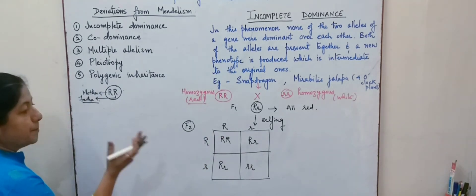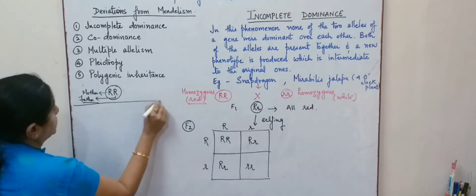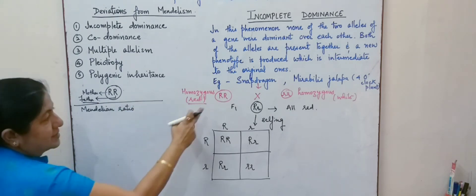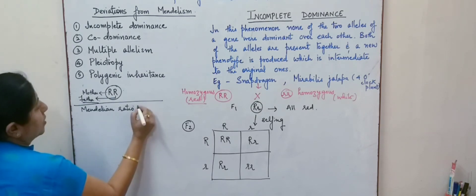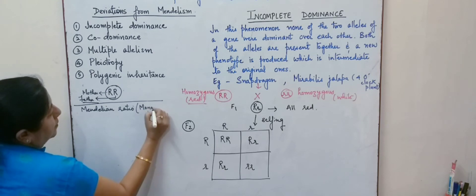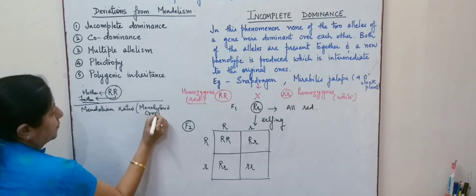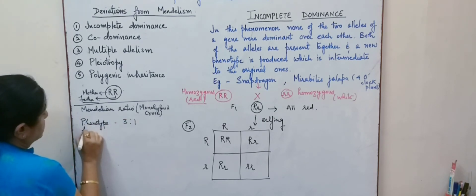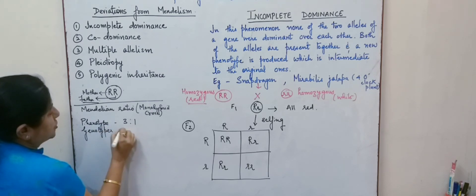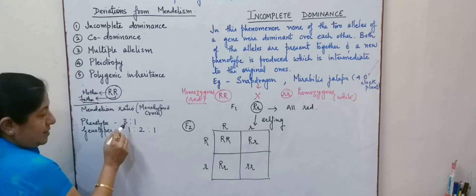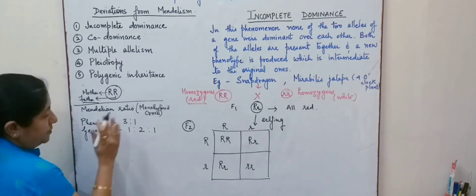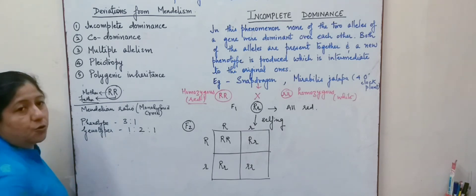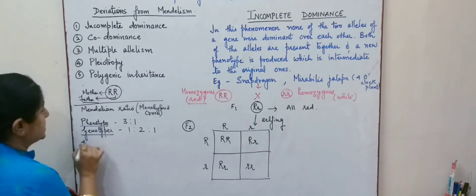Let us recall the Mendelian ratio for a monohybrid cross, since we are studying one trait. The phenotype ratio as proposed by Mendel was 3:1, whereas the genotype ratio was 1:2:1. That means 3 tall and 1 dwarf — since he conducted experiments on tall and dwarf plants — and genotypically, 1 homozygous tall, 2 heterozygous tall, and 1 homozygous recessive or dwarf. This was the normal Mendelian ratio.